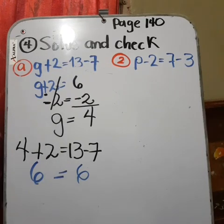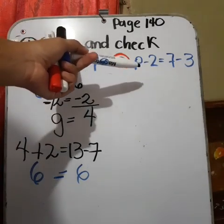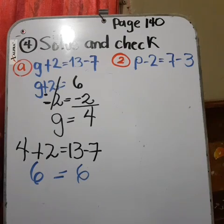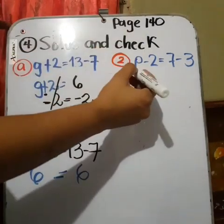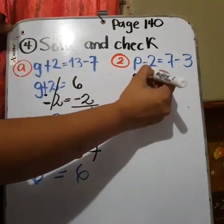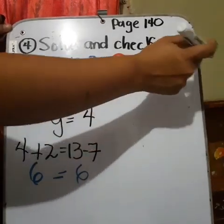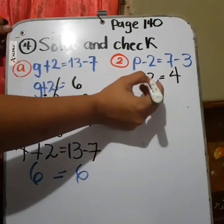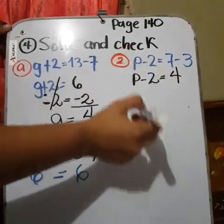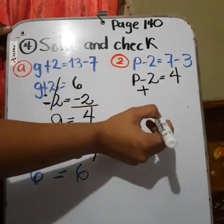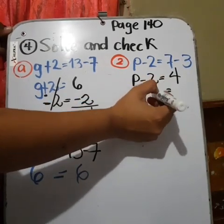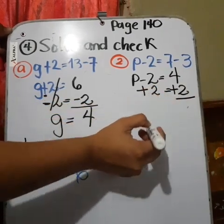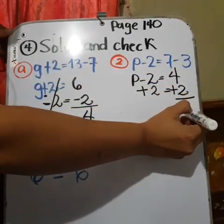Pi minus 2 equals 7 minus 3. What we are going to do first? We are going to copy this again. Pi minus 2 equals 7 minus 3 equals 4. Now, the opposite of the subtraction. ¿Cuál es el opuesto de la resta? La suma. Entonces, vuelvo a escribir este aquí. Plus 2. Plus 2. 4 plus 2. 6.